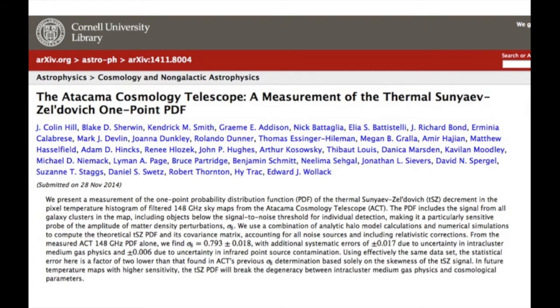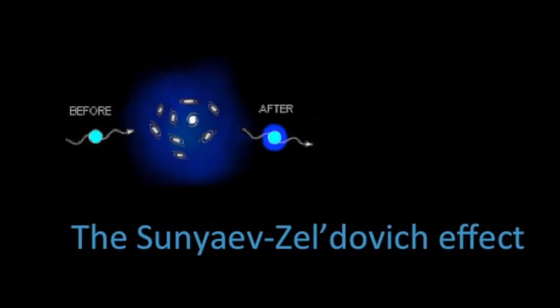Our recent ACT paper presents a measurement of the thermal Sunyaev-Zel'dovich one-point probability distribution function. In the observed ACT map, there is a signal from galaxy clusters casting a shadow against the background CMB due to the thermal Sunyaev-Zel'dovich effect, which occurs when CMB photons scatter off of the hot electrons in the clusters.